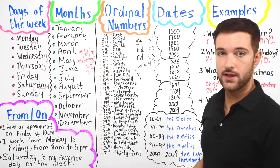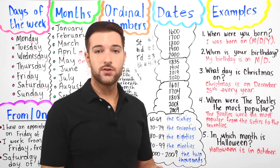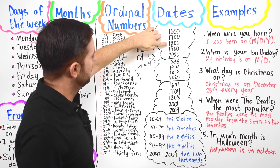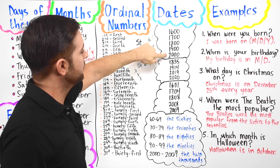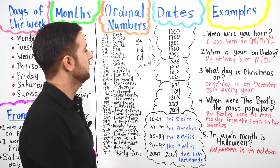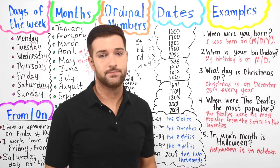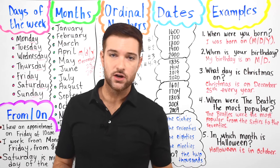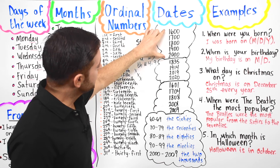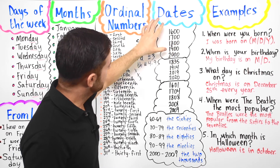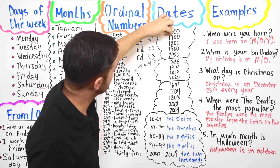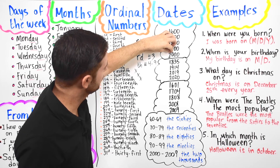Now let's talk about dates. Each year for a new century is pronounced like this: 1600, 1700, 1800, 1900, and 2000. Most years are then separated into two numbers — for example, we say 16 then 00, giving us 1600, 1700, 1800, 1900. Then 2000 is a little different.